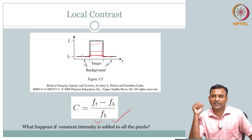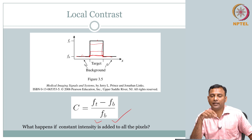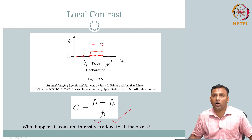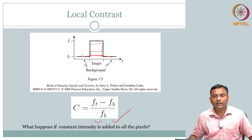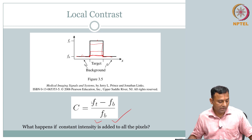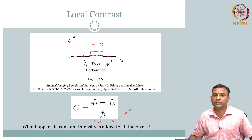So, contrast. If you had tried what happens if you add constant intensity to all the pixels, mathematically it would tell you that the contrast goes down. I hope that is what you qualitatively observed as well. But let us move on beyond contrast.